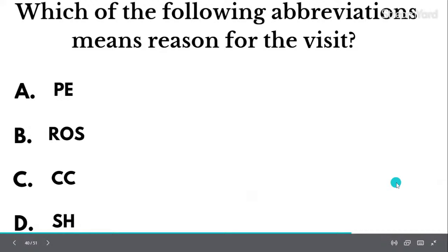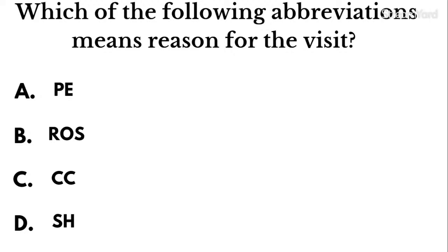Question twenty: Which of the following abbreviations means 'reason for the visit'? PE, ROS, CC, or SH? The correct answer is CC — chief complaint, which is the reason for the visit. PE is physical exam. ROS is review of symptoms — when a doctor reviews each of the patient's body systems. SH is social history, where information like whether a patient smokes, drinks, or exercises is recorded.